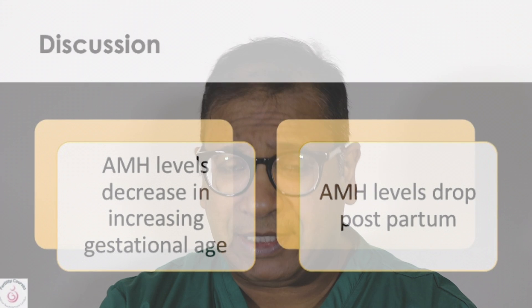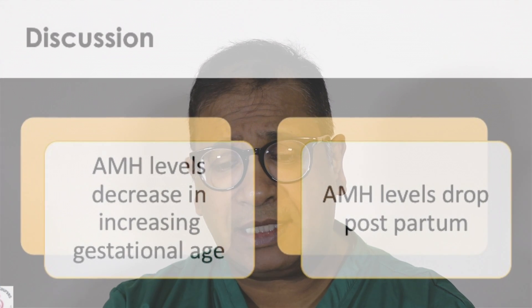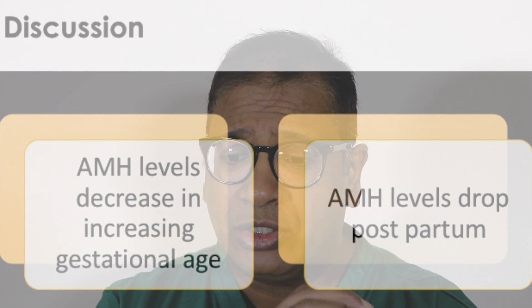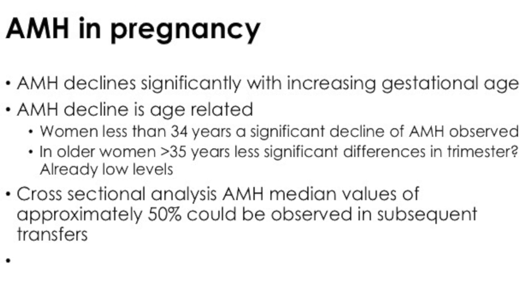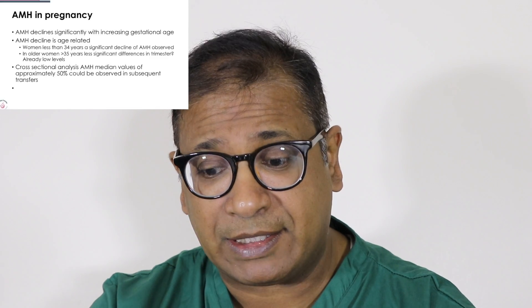The study tells us that AMH declines with increasing gestational age, and that this decline is also age-related. In women who are younger, they would have a higher AMH when they got pregnant, and the decline of AMH is much more dramatic and steeper. As women got older, their AMH from the start was lower and the decline was less profound. Overall, an approximately 50% decline of AMH can be observed during pregnancy.